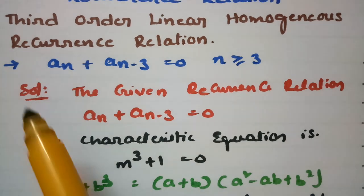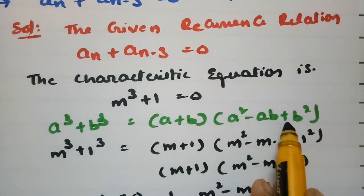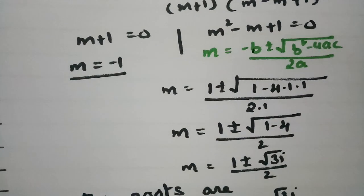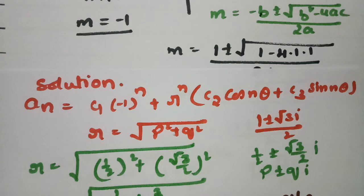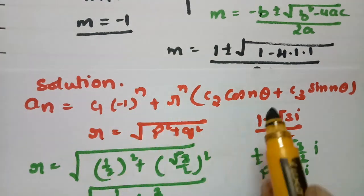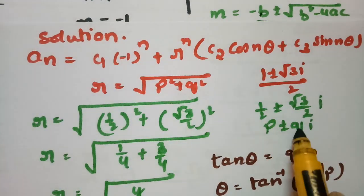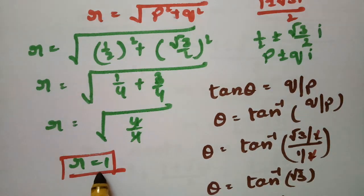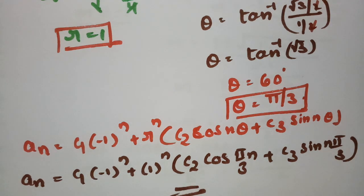To summarize: the given recurrence relation aₙ + aₙ₋₃ = 0 gives characteristic equation m³ + 1 = 0. The roots are m = −1 and m = (1 ± √3 i)/2. With r = 1 and θ = π/3, the general solution is the one derived. Thank you so much for watching. Tomorrow I will be uploading solutions for non-homogeneous recurrence relations — please practice and you can definitely score more.